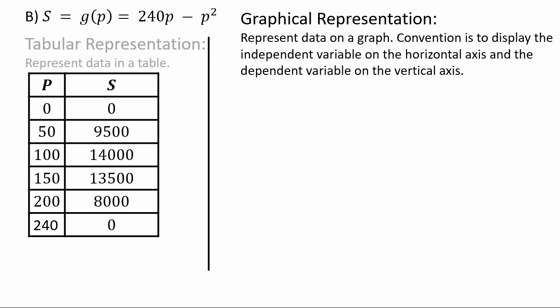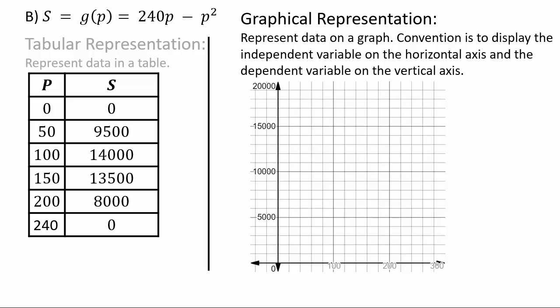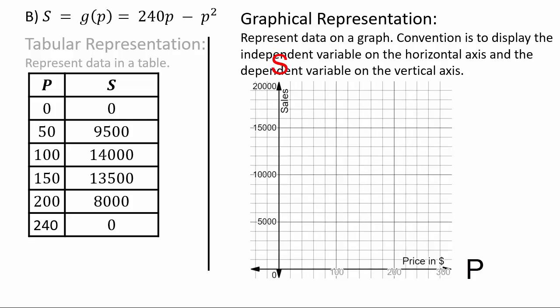How do we represent data on a graph when you have an input and an output? That's two dimensional relationship. So we would want to represent that in the Cartesian plane. That means you have an x-axis and a y-axis. In this case, a p-axis and an s-axis because you are using the letters p and s instead of x and y. The convention for graphical representation is that you display the independent variable on the horizontal axis and dependent variable on the vertical axis.